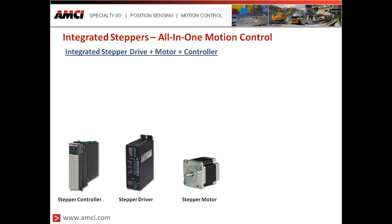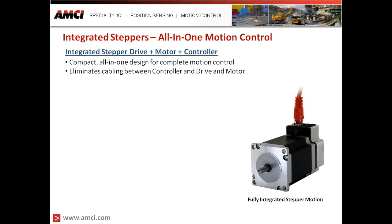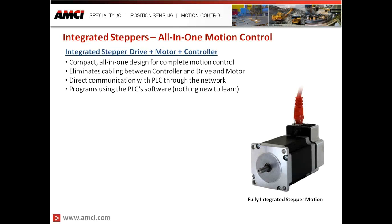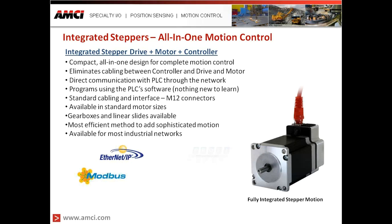The final product is the integrated all-in-one solution. This provides a compact all-in-one design for complete motion control, eliminating cabling between the controller, drive, and motor. It has direct communication with the PLC managed through the onboard industrial network, and it programs using the PLC's software. Standard cabling with M12 connectors provides a rugged connection for industrial environments. Available in standard motor sizes, they mount easily to gearboxes and linear slides — and it is by far the most efficient method to add sophisticated motion to your PLC-based system.